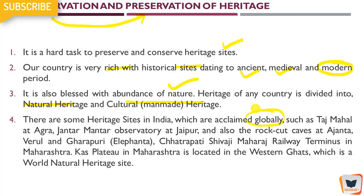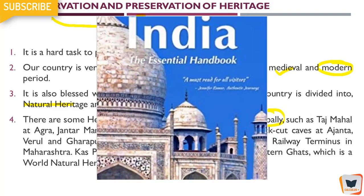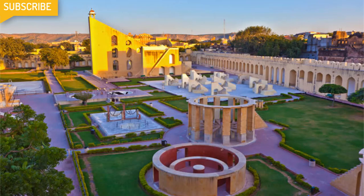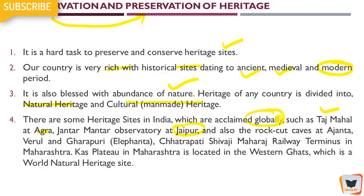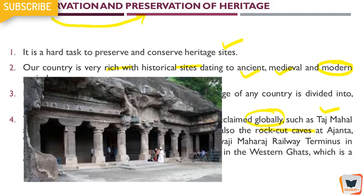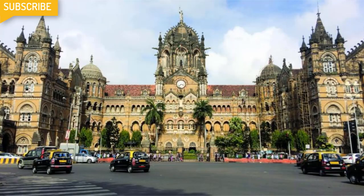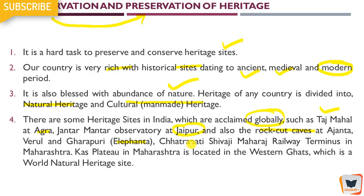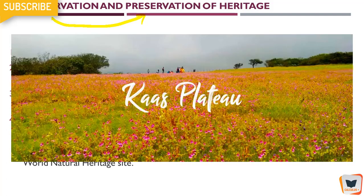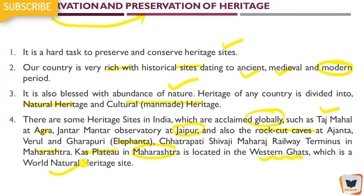Then there are some heritage sites in India which are acclaimed globally — the whole world knows what India has. Like the Taj Mahal in Agra, then Jantar Mantar observatory in Jaipur, and there is also a Jantar Mantar observatory in Delhi. Then the rock-cut caves — Ajanta, Ellora, and Gharapuri which is Elephanta — those are also important. And the Western Ghats, which is a world natural heritage site — that is a big thing. Foreign tourists come in large numbers to visit heritage sites in our country and it makes us very proud that we have all these things.